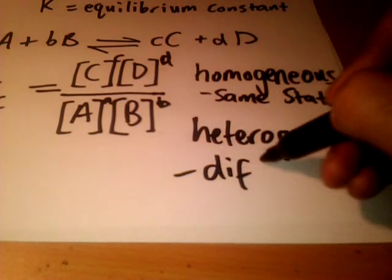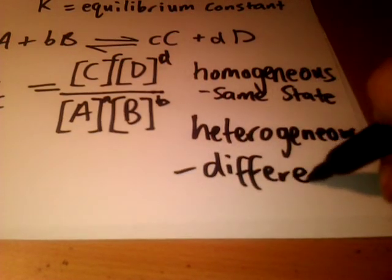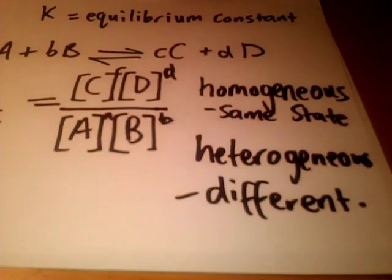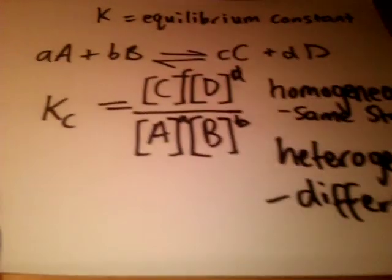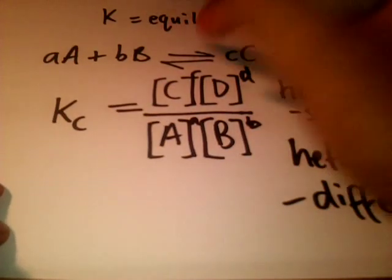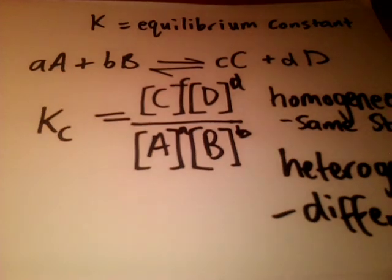Some of them could be solids. For example, B could be a solid—that would be the case when it's heterogeneous. We can discuss some examples, for example the Haber process which is homogeneous.